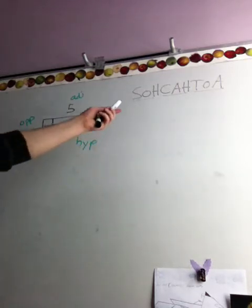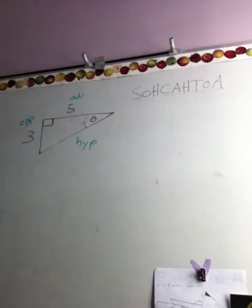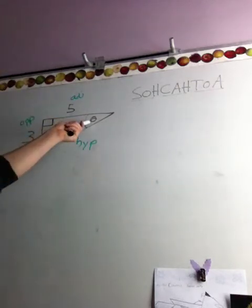So which of these uses opposite and adjacent? Tangent. Opposite and adjacent. So tangent is what we're going to use to solve this problem, to find the measure of that angle.